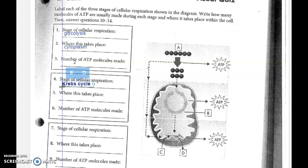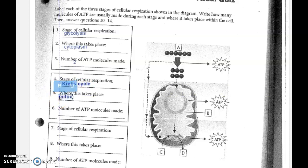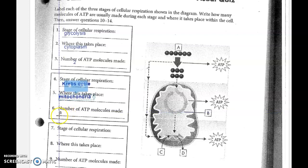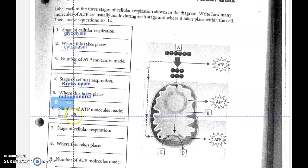That takes place inside the mitochondria — the mighty mitochondria, the main site of ATP production, the powerhouse of the cell, the site of ATP production. In this case, we're making some, using some, and come out again with a grand total of about two ATP.